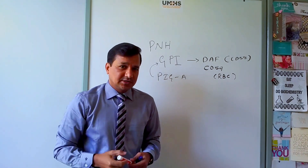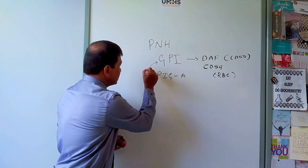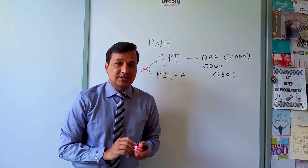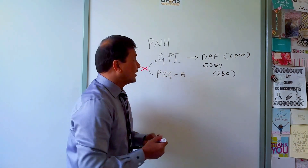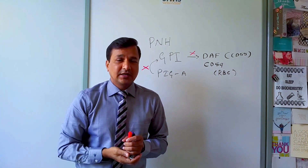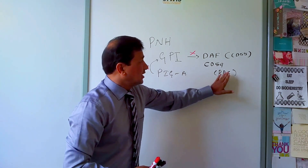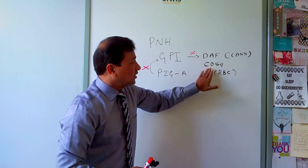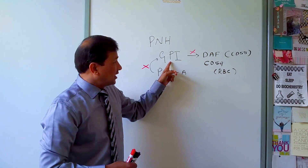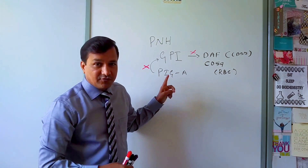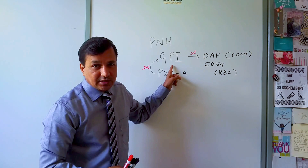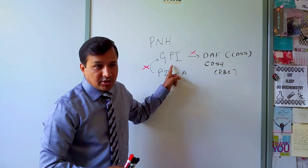If there is any mutation in the PIG-A gene, a defective GPI will be synthesized. This defective GPI won't bind to DAF and CD59 over the red blood cells, since red blood cells hold DAF and CD59 on their plasma membrane using GPI linkage.